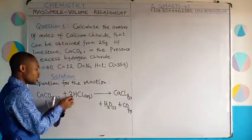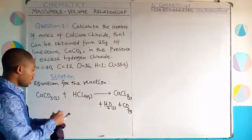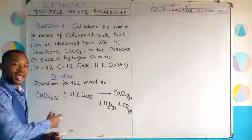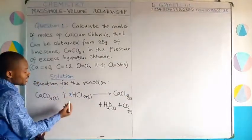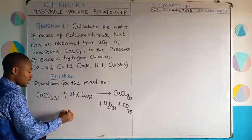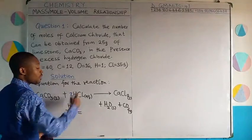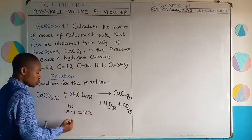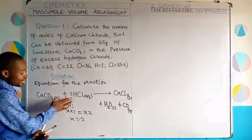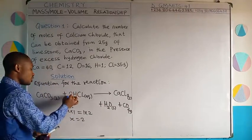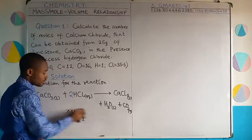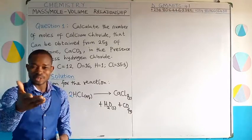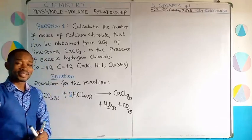Using the balancing method with an unknown x: x × 1 atom of hydrogen in the reactant equals 1 × 2 atoms in the product, giving x = 2. So we put 2 in front of HCl. Automatically, chlorine also balances because whatever coefficient affects hydrogen also affects chlorine in HCl, since hydrogen and chlorine each have valency of 1. Please visit our valency video or notes to refresh your memory on this.